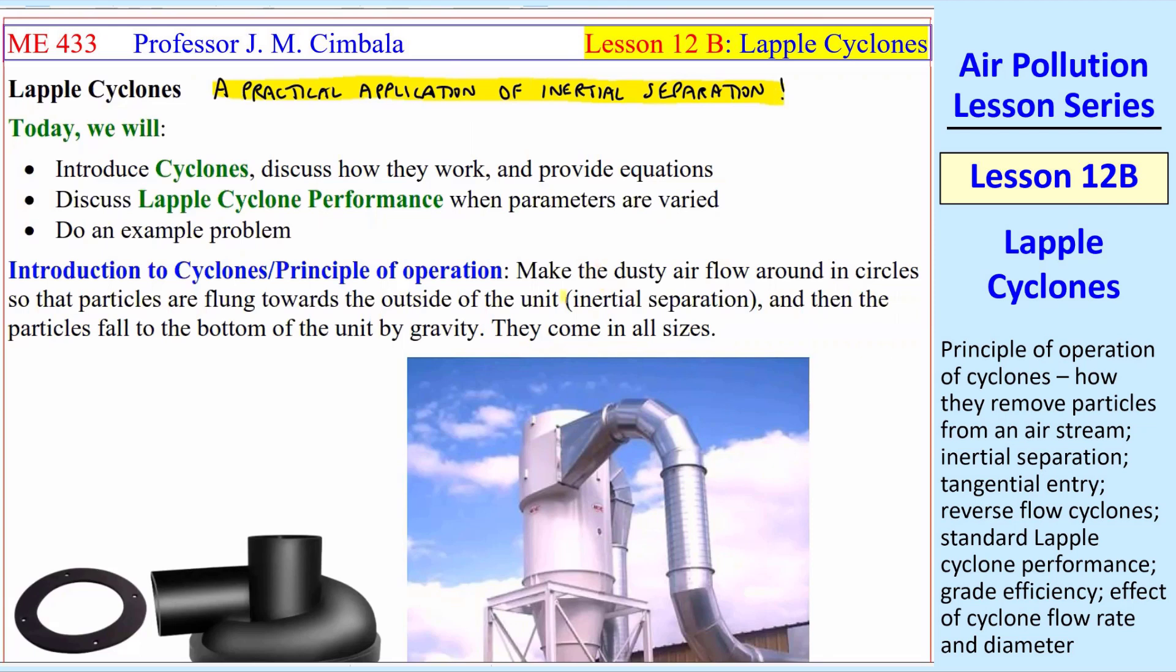By way of introduction, the principle of operation is to make the dusty air flow around in circles so that particles are flung towards the outside of the unit. This is inertial separation. You have your air going around in a circle, and if you have a particle here, it is going to veer off instead of following the air streamline. These particles will fling to the outside of the unit, and then particles will fall to the bottom by gravity. They come in all sizes and shapes.